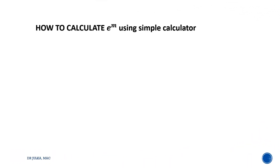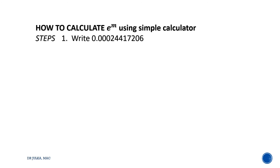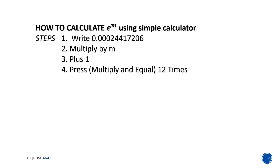How to calculate e raised to the power m using a simple calculator. First write 0.000244172060 in your calculator and then multiply by m, then plus 1. Press multiply and equal 12 times — multiply equal 1, multiply and equal 2, multiply and equal 3, and so on 12 times.